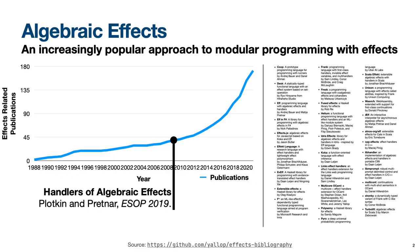Algebraic effects is an increasingly popular approach to modular programming with effects, both in theory and practice. On the left of the slide is a graph summarizing how the number of publications related to algebraic effects and handlers published at conferences such as POPL is rapidly increasing. On the right is a long list of languages and libraries that provide practical support for algebraic effects and handlers specifically.